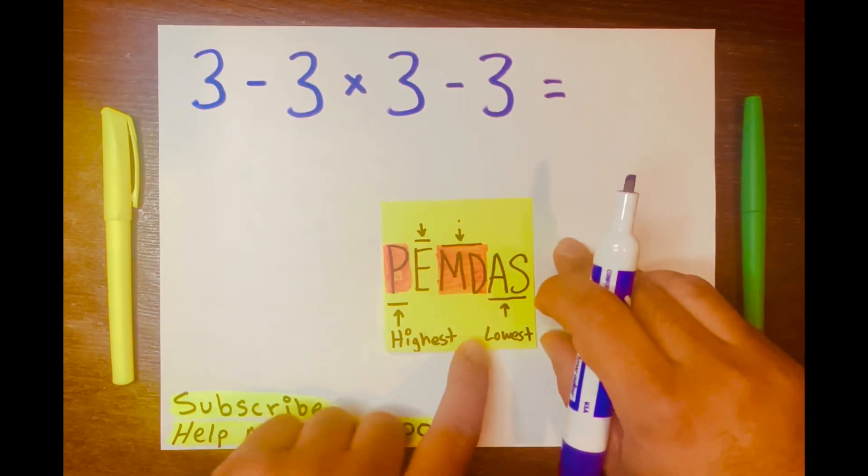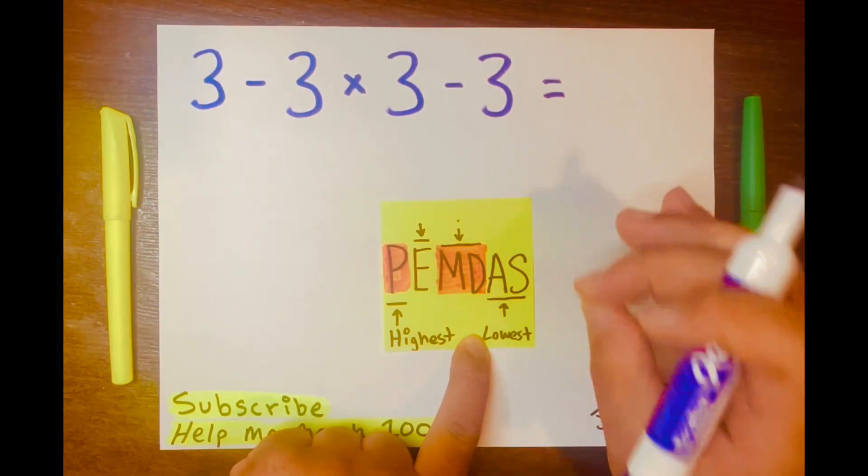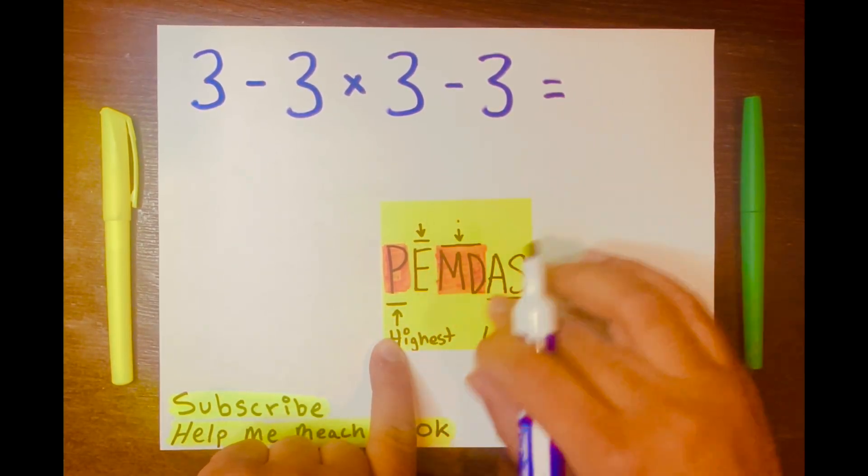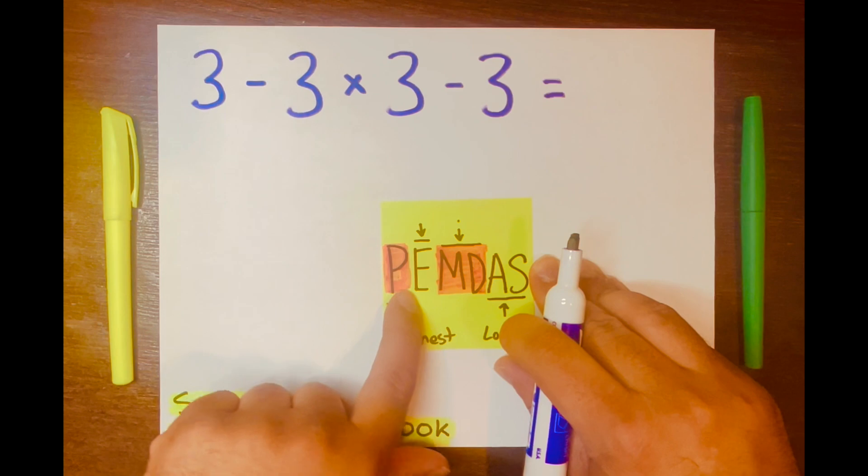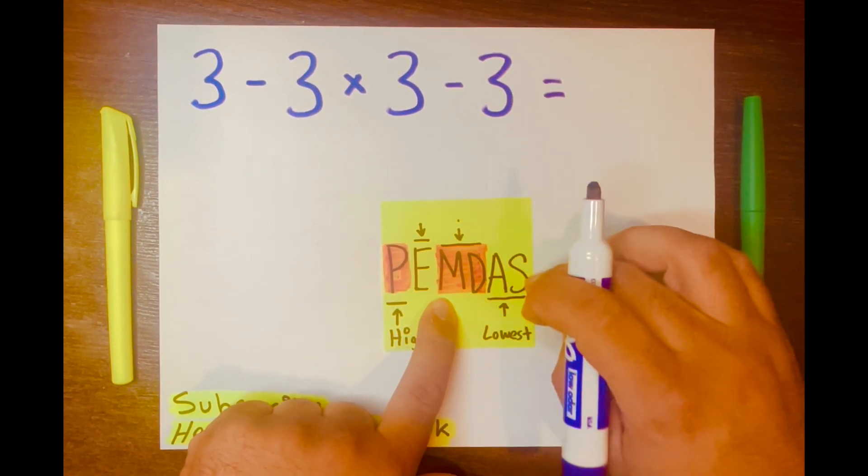One of the biggest mistakes some people make when using PEMDAS is not realizing that it's split into four different levels. So P is one level, E is another level, MD is another level, and lastly AS is another level. Four different levels.